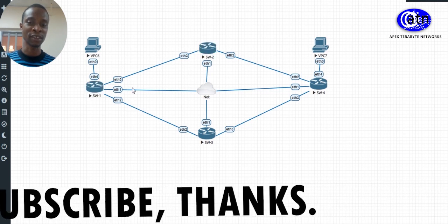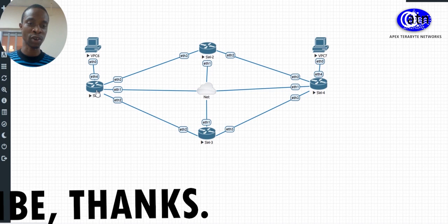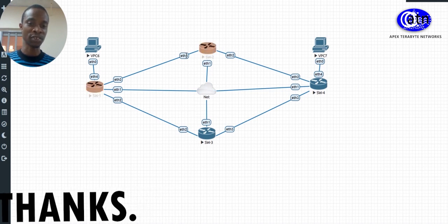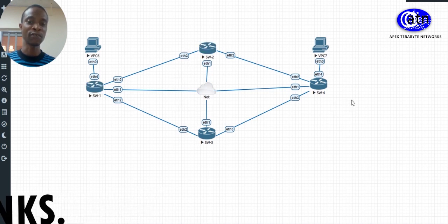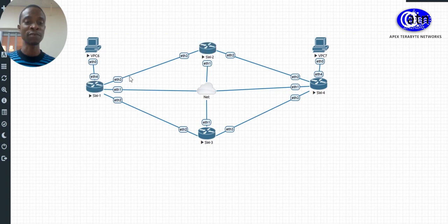So if I disable one path, Switch 4 should still communicate with Switch 1. But if both root ports have been disabled, then you need to find another means by which Switch 4 will communicate with Switch 1. That is also the purpose of redundancy — once a path fails, the other one should pick up, and once the failed path is restored, normal function resumes.